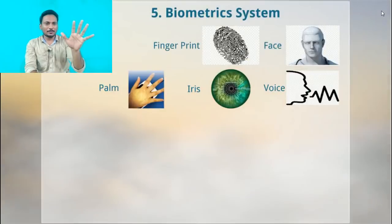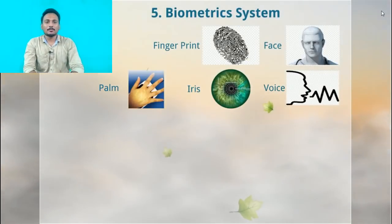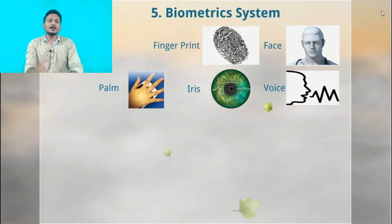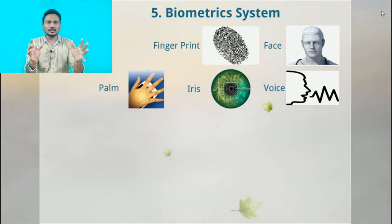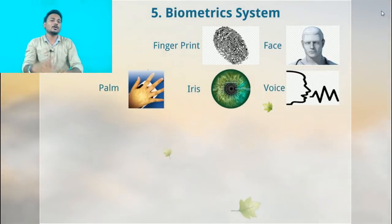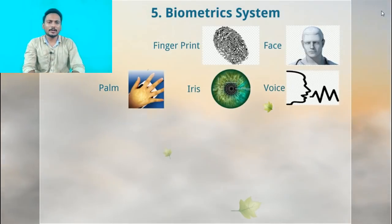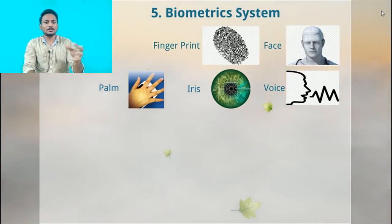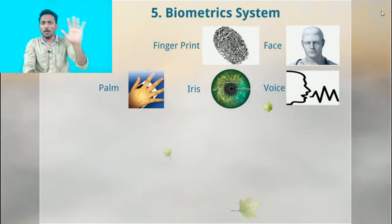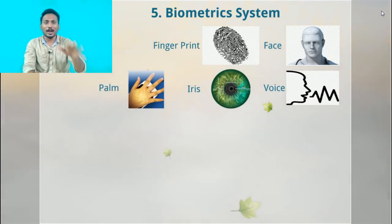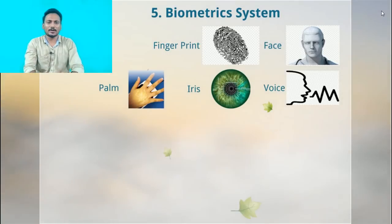Your fifth project idea on IoT is the biometric system. The biometric system is used to determine whether a user is an authorized or unauthorized user. For the security concept, we go for biometric. For example, fingerprint, face recognition, iris recognition, form recognition, and voice recognition — these are some types of biometric concepts.